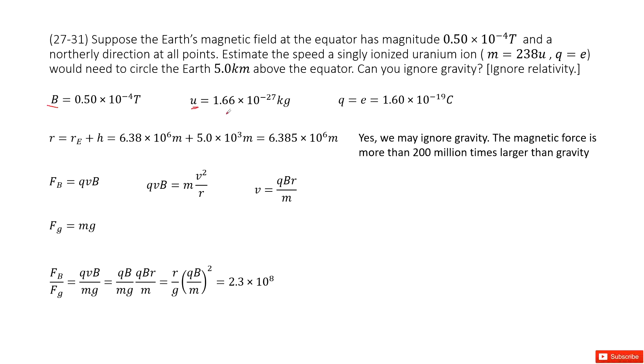The next one tells us this charged particle does circular motion above the equator. So the distance above the equator is given as 5,000 meters.